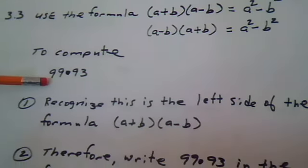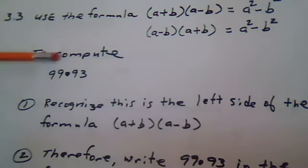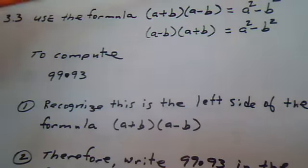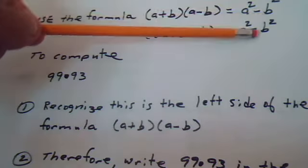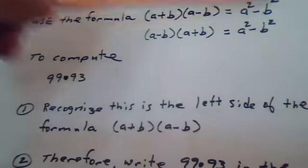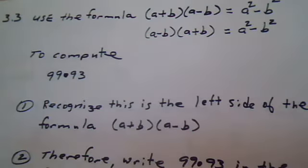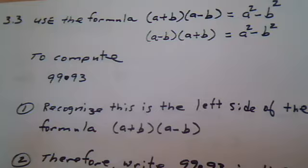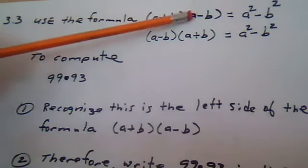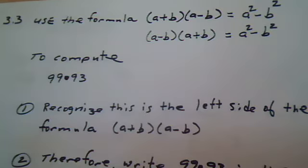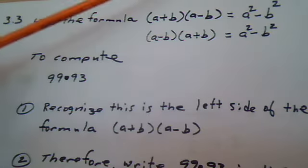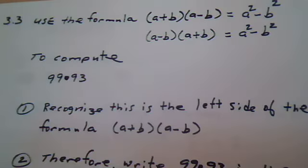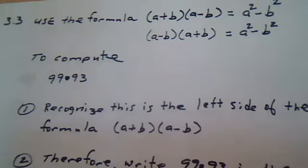They gave us the left side so we need to write this multiplication like a subtraction of two squares. These two are the same formula since the order in multiplication does not matter. You could say a plus b times a minus b or a minus b times a plus b. The order of the numbers in the multiplication does not affect the result.